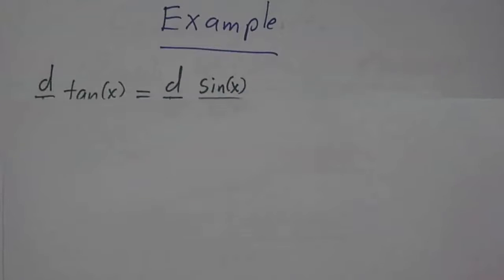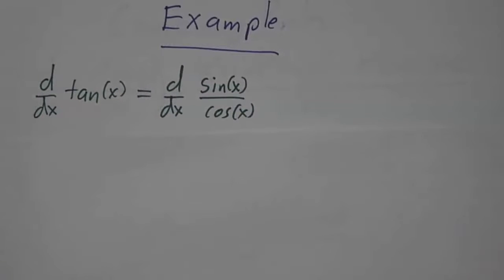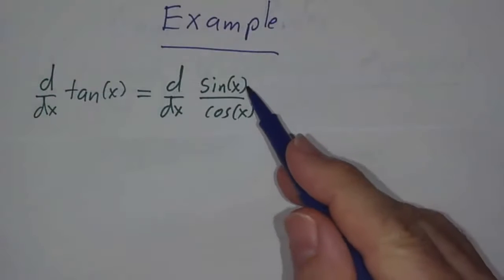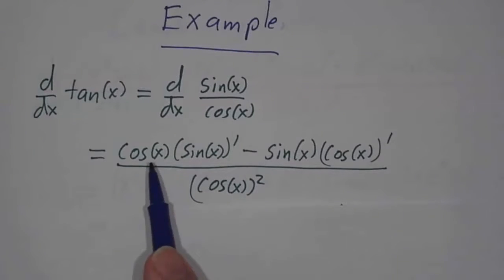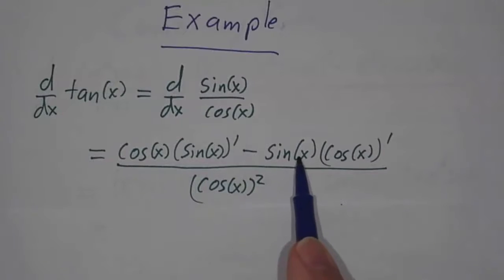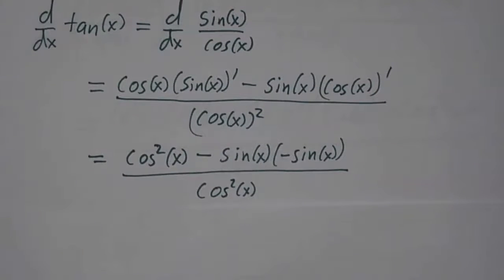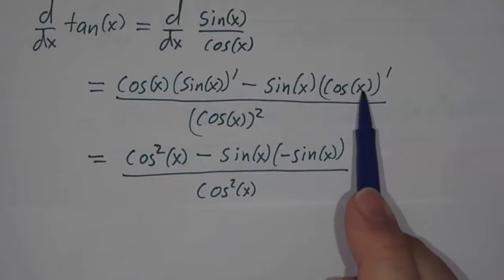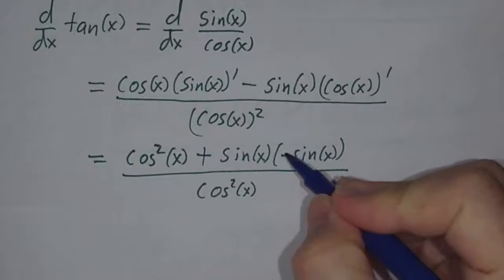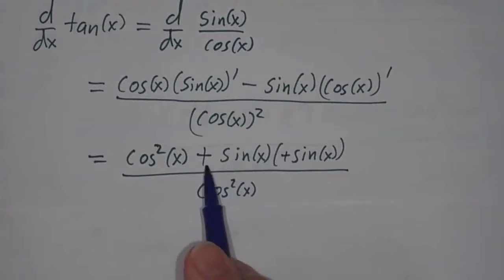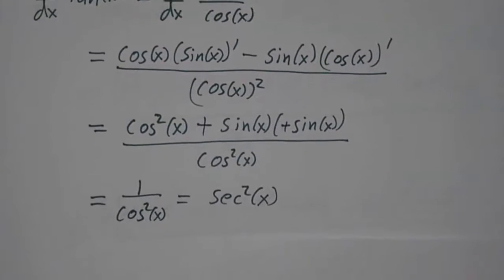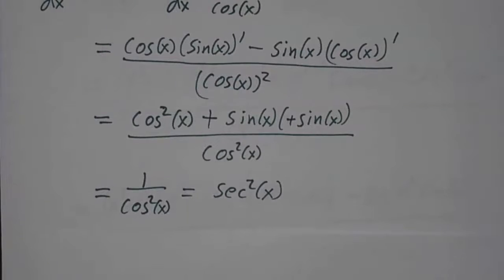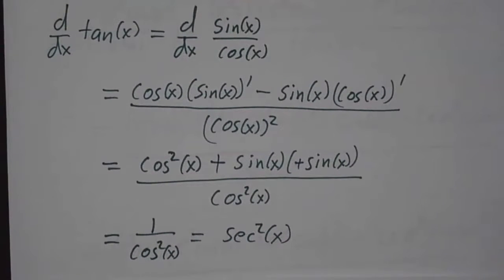So let's figure out the derivative of the tangent function. We know the derivative of sine and cosine, but what's the derivative of tangent? Since that's sine over cosine, the derivative must be cosine times the derivative of sine, minus sine times the derivative of cosine, divided by cosine squared. That gives us cosine squared, minus sine of x times the derivative of cosine. The derivative of cosine is negative sine of x, and those two negatives cancel, so we wind up with cosine squared plus sine squared. But cosine squared plus sine squared is 1, so we wind up with 1 over cosine squared, and that's secant squared. So we've just figured out that the derivative of tangent is secant squared.